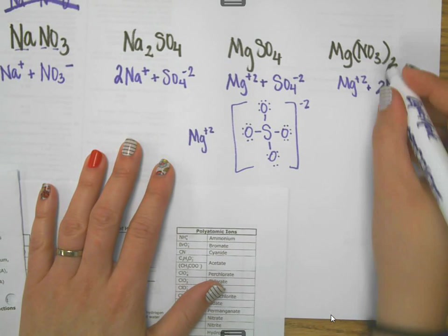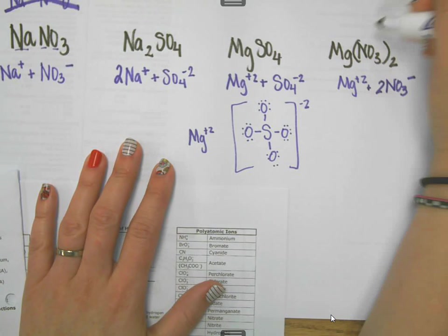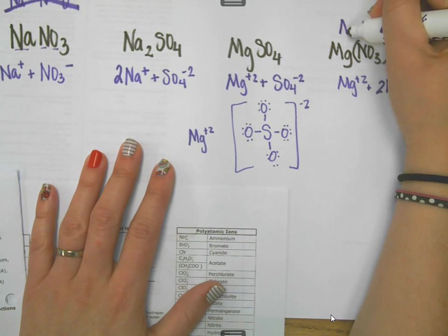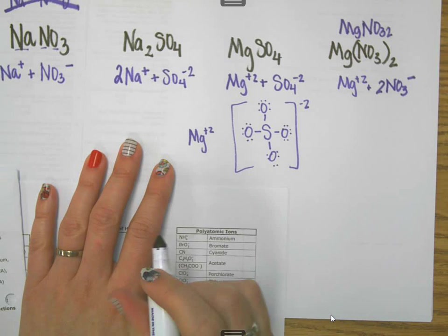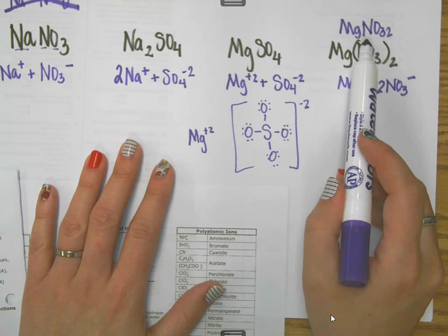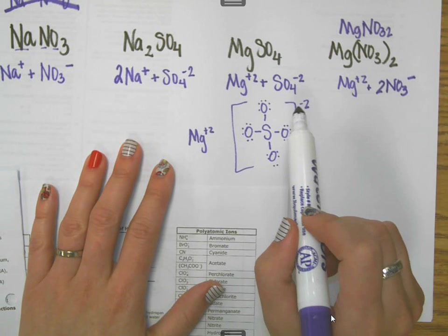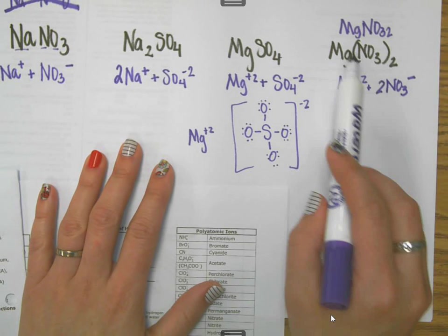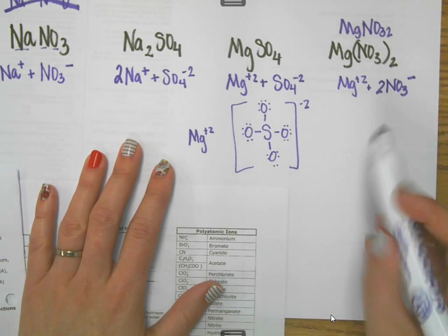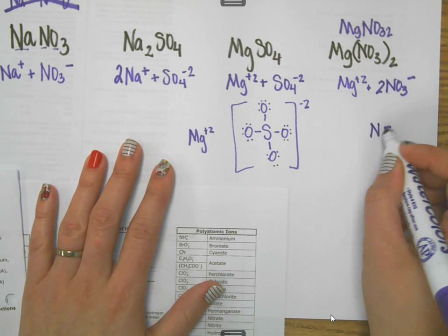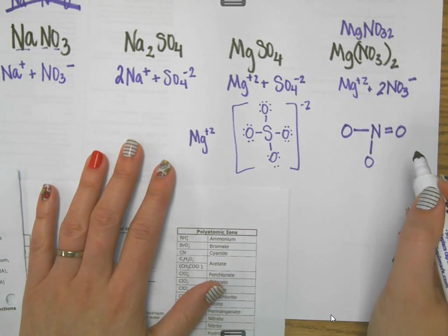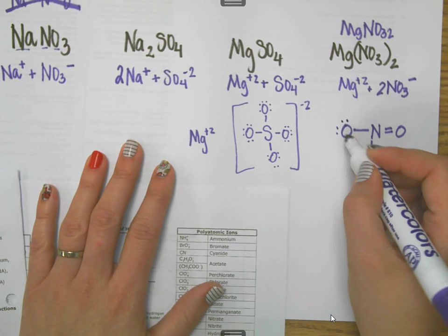And that looks like one nitrogen and 32 oxygens. And that's not what this means. It's two of this whole group. If you want a drawn out explanation, basically the nitrate would have oxygens around it, such as this. I hope to goodness I drew this correctly really quickly.